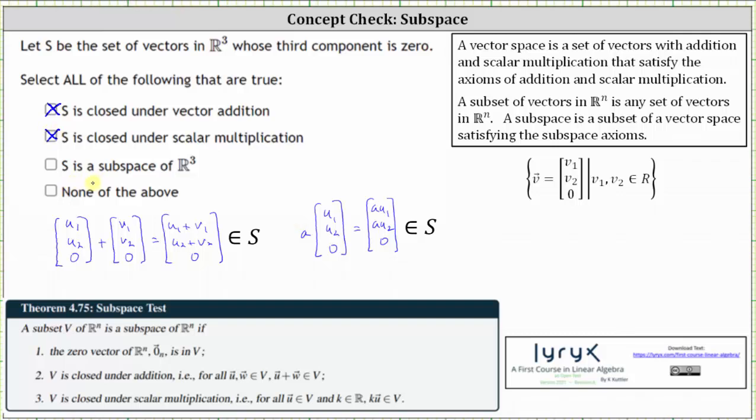To check to see if S is a subspace of R³, we do need to verify that the zero vector is in the subset S, where the zero vector would be the vector zero, zero, zero. This is in R³, where the third component is zero, verifying the zero vector is in the subset S, which means S is a subspace of R³. I hope you found this helpful.